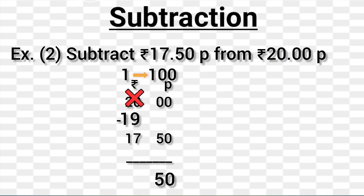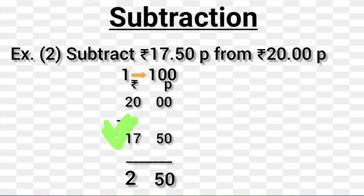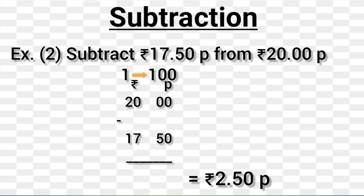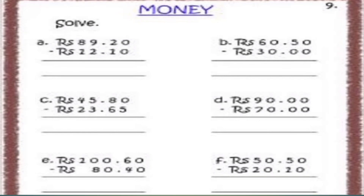After borrowing 1 rupee from 20 rupees, we are left with 19 rupees. Subtracting 17 rupees from 19 rupees, we get 2 rupees. So we write 2 rupees in the rupees column and 50 paise in the paise column. At last, we get 2 rupees and 50 paise. Now, solve this at your home and get the result quickly.